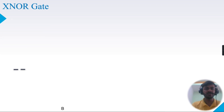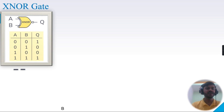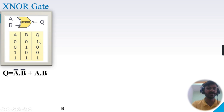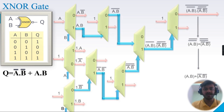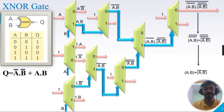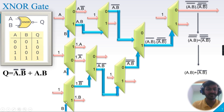Now we'll implement the XNOR gate using 1-to-2 demuxes. The truth table says if both inputs are the same, output will be high. The logical expression is A-bar AND B-bar plus A AND B. We need eight 1-to-2 demuxes. The first demux has B as select line and 1 as input: Q0 equals B-bar and Q1 equals B by identity law. The second demux has A as select line and 1 as input: Q0 equals A-bar and Q1 equals A.